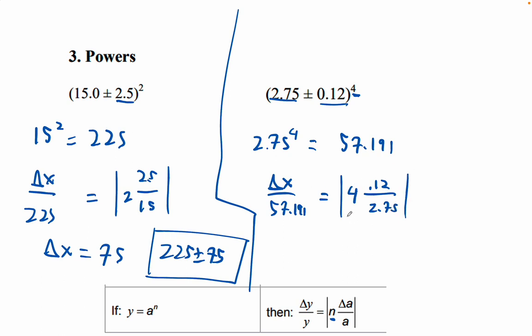Again, just if you get a negative number when you're calculating your uncertainty, just ignore the minus sign. So literally I'm going to go times 4 times 0.12 divided by 2.75. This is 9.98, so delta X is 9.98.